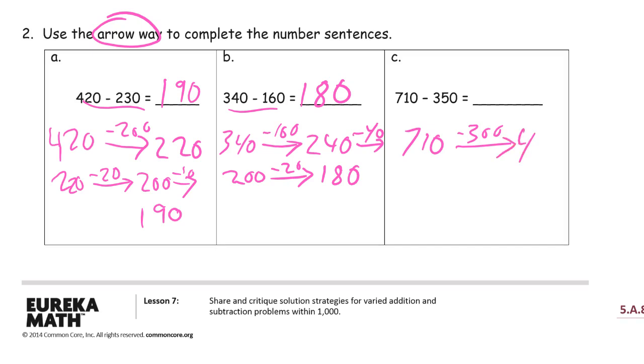So I'm going to take the 40, which will get me down to 200. And then I still have to subtract 40. 360.